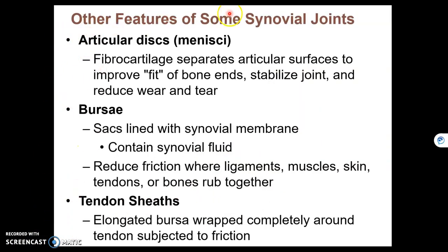These are three features that some synovial joints contain, but many do not. Articular discs are little pockets of fibrocartilage that we see in the knee — we also call those menisci. A bursa is a pocket of synovial fluid to help reduce friction in joints. And tendon sheaths wrap around tendons to help reduce friction.